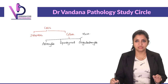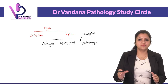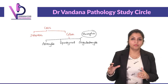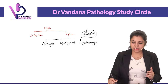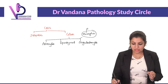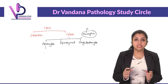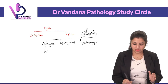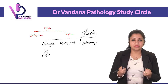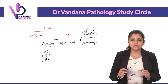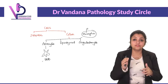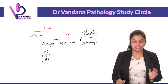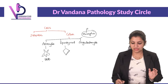Microglia is written separately because it is a mesenchymal derivative — it is the resident macrophage of the CNS. Now, astrocytes — the name means they are star-shaped cells. Their predominant function is to regulate the blood-brain barrier. They are also the first cells to respond whenever there is injury, so you can treat them as the mother cells of the CNS.